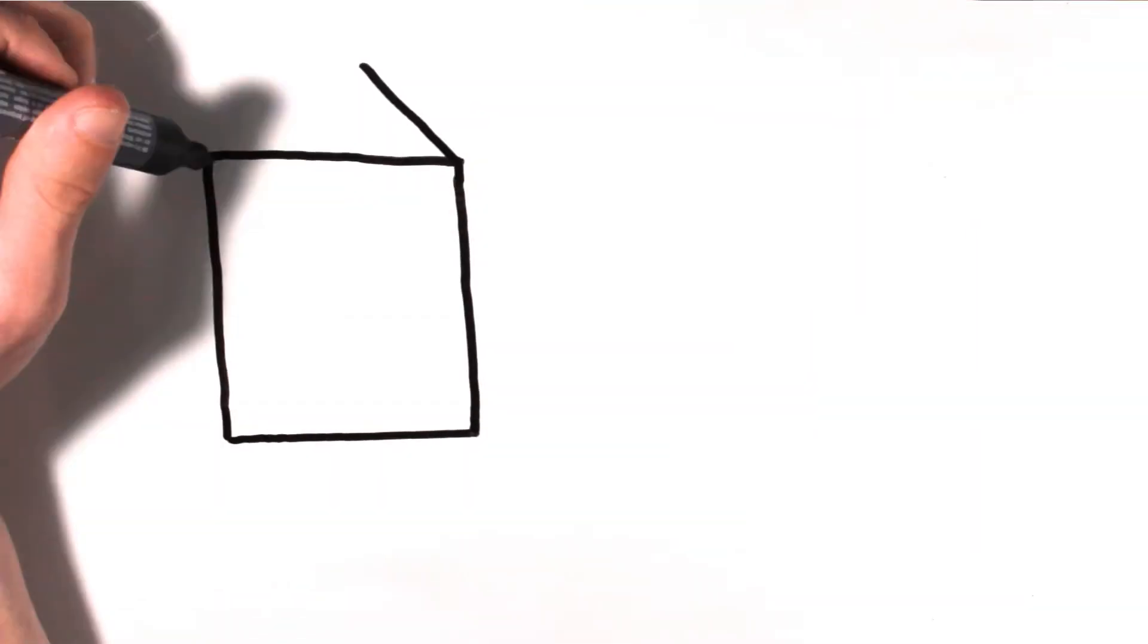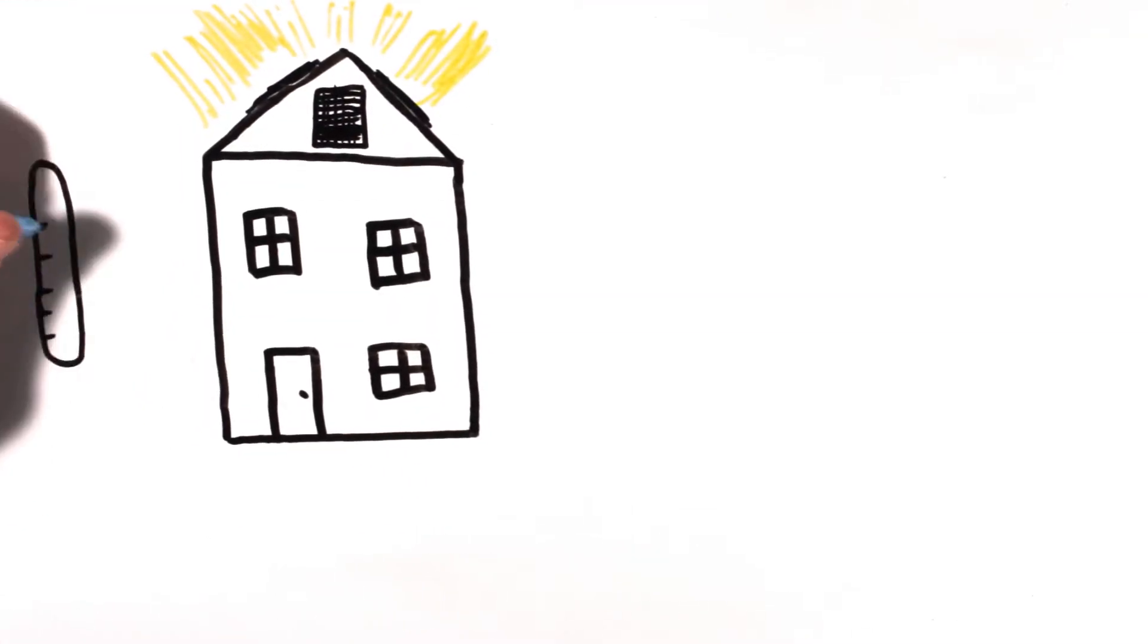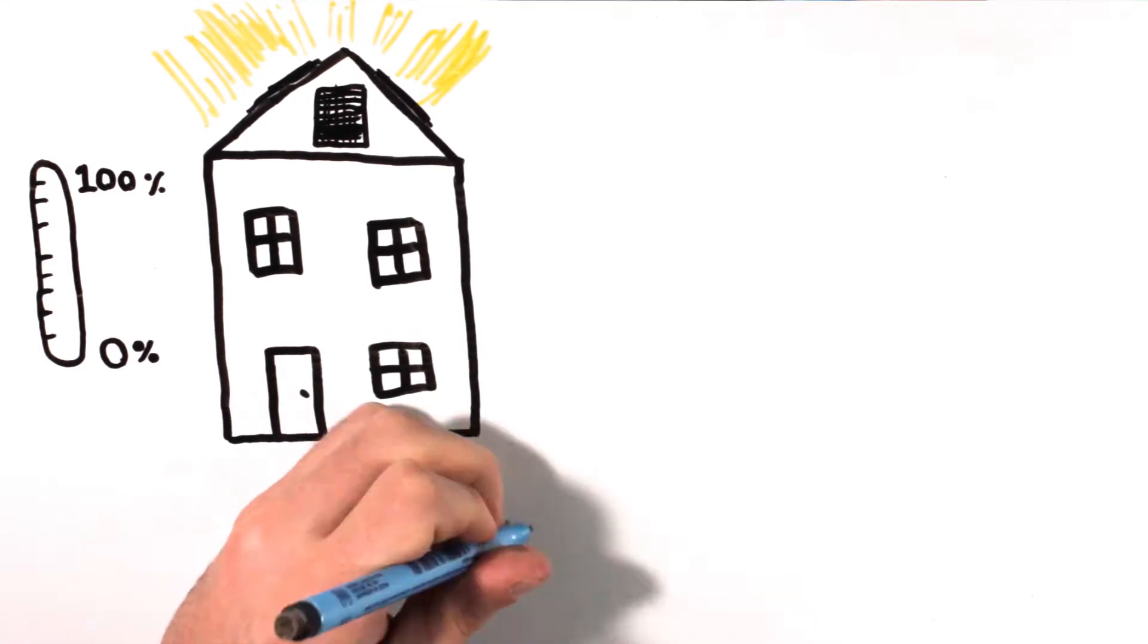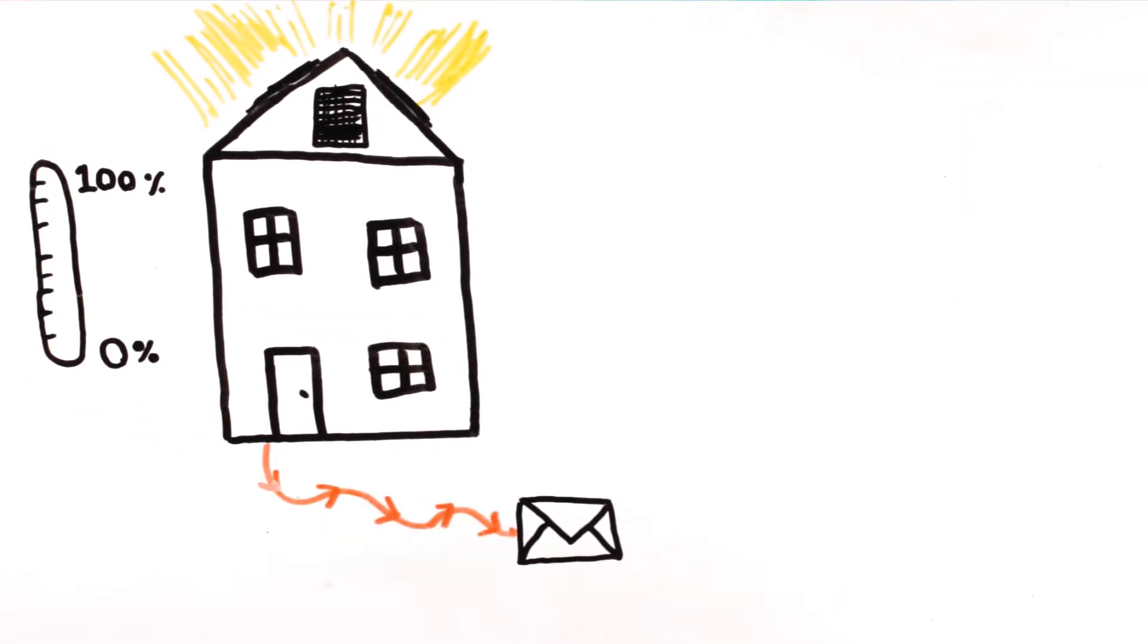But if you are able to generate your own energy with the help of, for example, solar panels, you will be able to reduce that footprint to zero only if the energy is used to support your email activities. Because you also need your energy for other things like your television or your heating system.